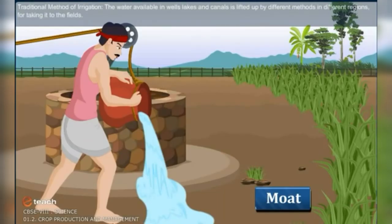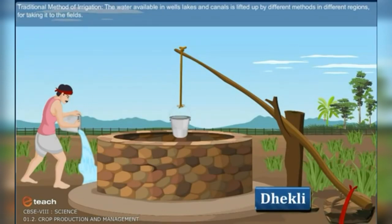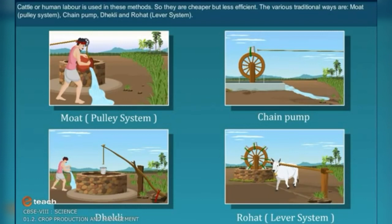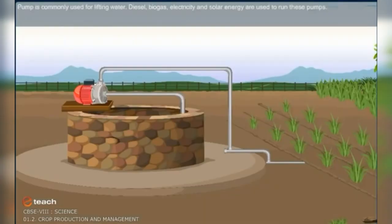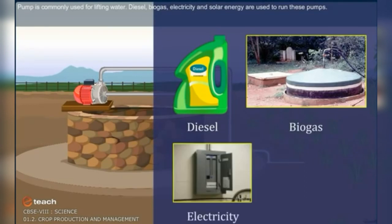Traditional method of irrigation. The water available in wells, lakes, and canals is lifted up by different methods in different regions for taking it to the fields. Cattle or human labour is used in these methods, so they are cheaper but less efficient. The various traditional ways are: Mote pulley system, chain pump, Dhekli, and Rahat lever system. Pumps powered by diesel, biogas, and electricity are also commonly used for lifting water.